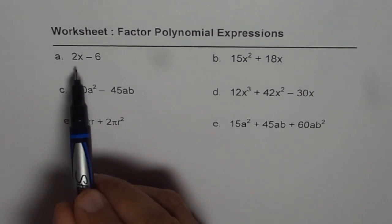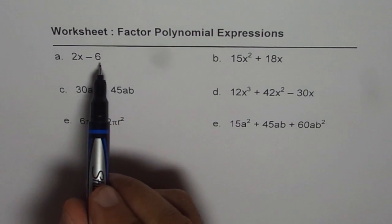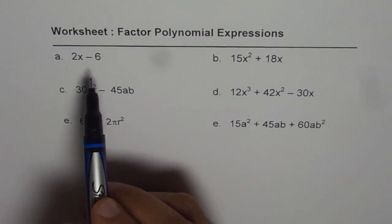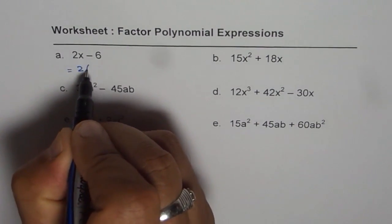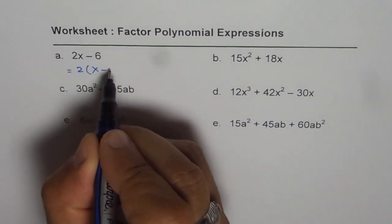We have a binomial 2x minus 6, and the common factor between them is the number 2. So it could be written as equal to 2 times x minus 3.